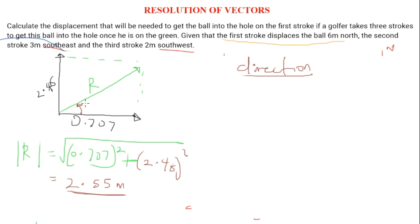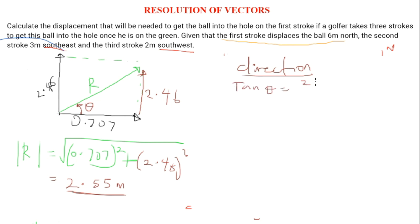To find the direction of the displacement vector, we place theta as the angle from the x-axis to r. Using tangent since we have the opposite and adjacent sides: tan theta equals opposite 2.46 over adjacent 0.707, which equals 3.48.